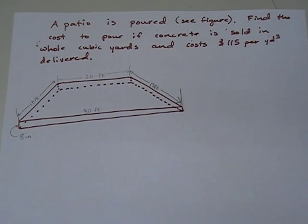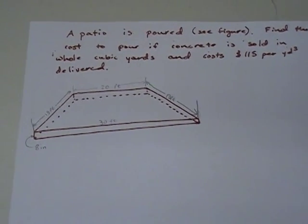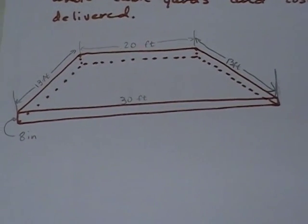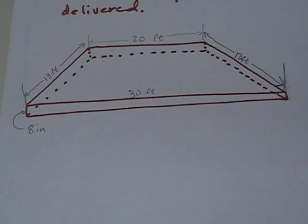A patio is poured. Find the cost to pour if concrete is sold in whole cubic yards only and costs $115 per cubic yard delivered. I want to zoom in on this picture here. Our picture shows a trapezoid 20 feet wide on one side, 30 feet wide on the other, 13 feet wide on both diagonals, and an 8 inch thickness.